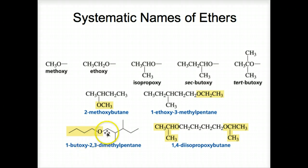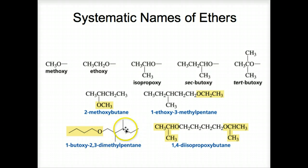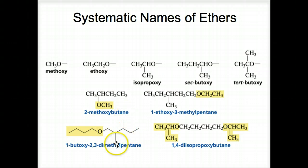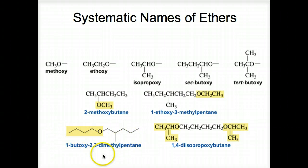Here's another example using this structure as a substituent. We call it butoxy off of number one, and use the longest chain as pentane — one, two, three, four, five — and then we have two methyl groups, giving us 1-butoxy-2,3-dimethylpentane, with 1-butoxy listed first.